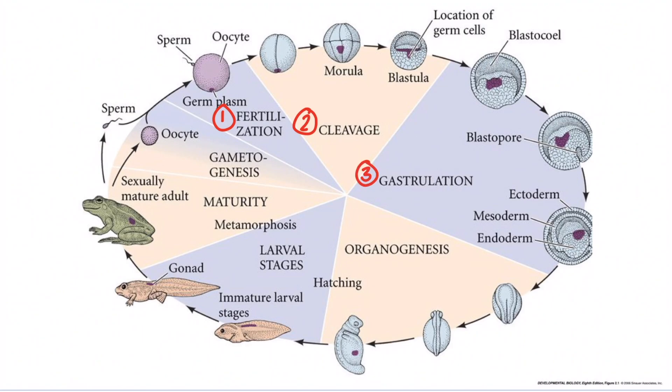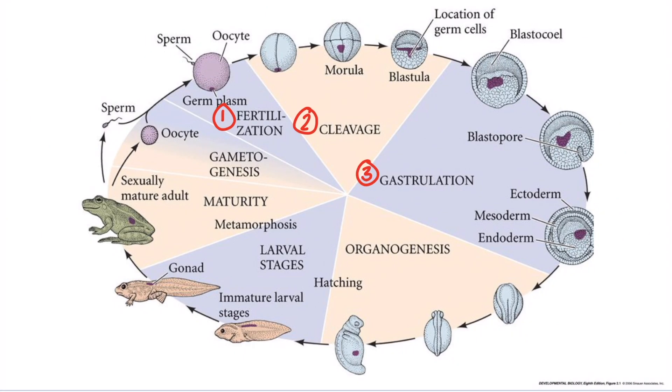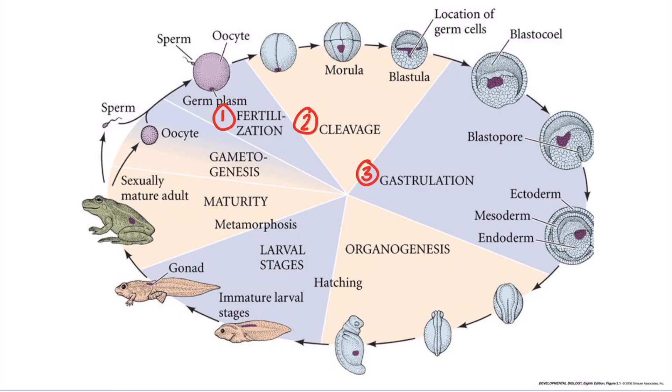The next stage in embryonic development is gastrulation, a dramatic reorganization of the hollow blastula into a multi-layered embryo called a gastrula. Here is an early gastrula, where the cells move during gastrulation to take up new positions and acquire new neighbors.